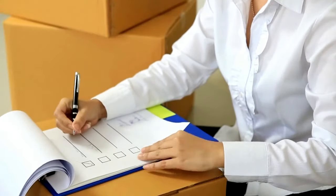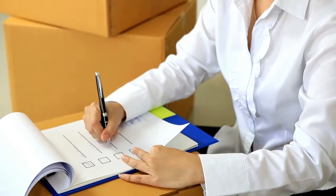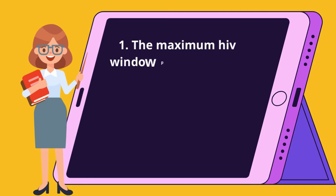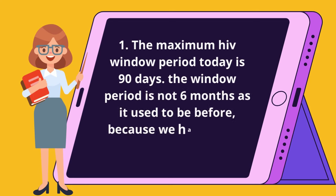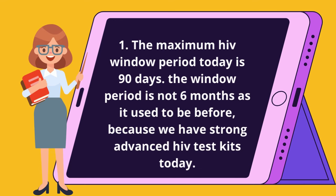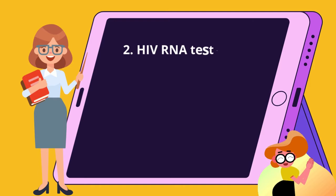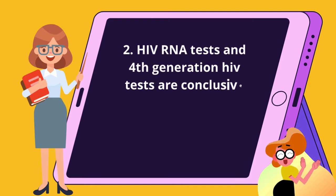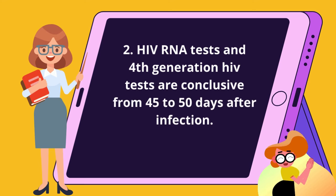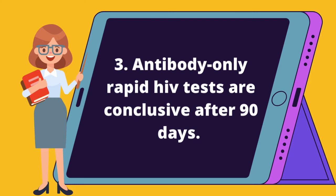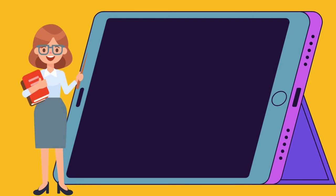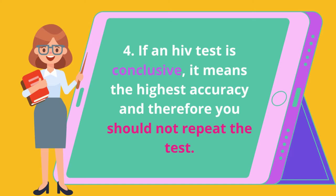As a bonus, you guys keep on asking me the same questions concerning HIV testing. Here are a few points you need to know. 1. The maximum HIV window period today is 90 days — not 6 months as it used to be, because we have advanced HIV test kits today. 2. HIV RNA tests and 4th generation HIV tests are conclusive from 45 to 50 days after infection. 3. Antibody-only rapid HIV tests are conclusive after 90 days. 4. If an HIV test is conclusive, it means the highest accuracy, and therefore you should not repeat the test.